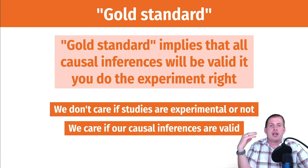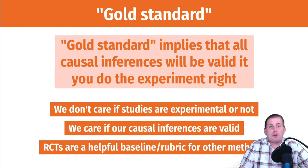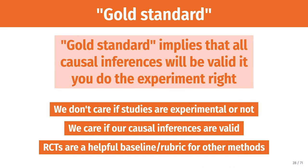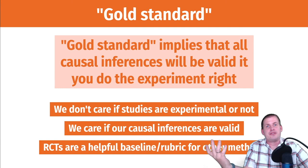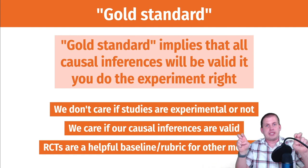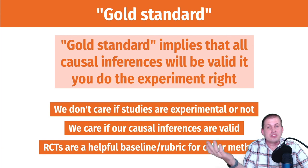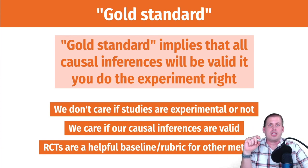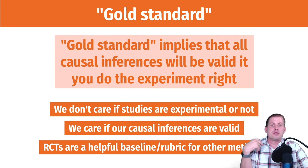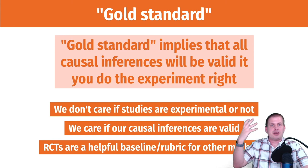RCTs help because when you think about a DAG, all the confounding arrows are deleted — that's great. With observational data you have to deal with confounders, but you can still find valid causal inference. The gold standard idea is useful as a rubric for thinking about other methods. For matching, we're faking a control group — finding untreated people similar to treated ones. For difference-in-differences and regression discontinuity, we're also simulating a control group. All these models use the language of RCTs as a baseline for measuring causal effects.